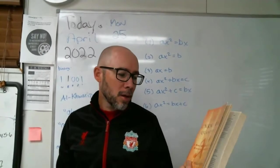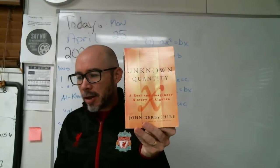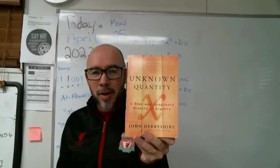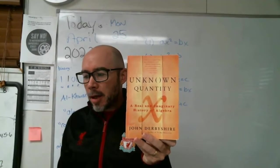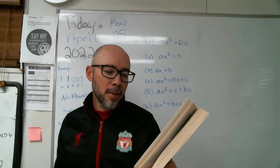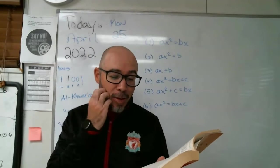There's a great book, a summer reading here, by this guy here, John Derbyshire. I read another book by him about the Riemann hypothesis. Unknown Quantity, A Real and Imaginary History of Algebra. Sounds like exciting reading, right?